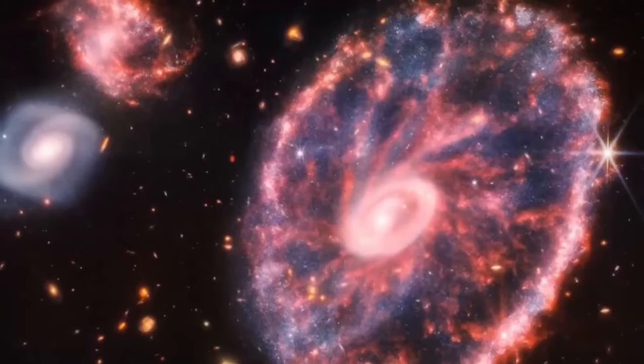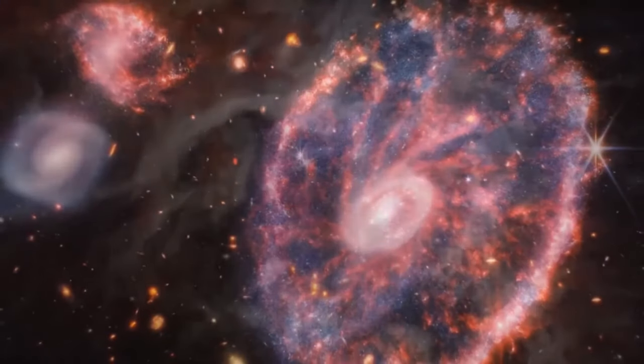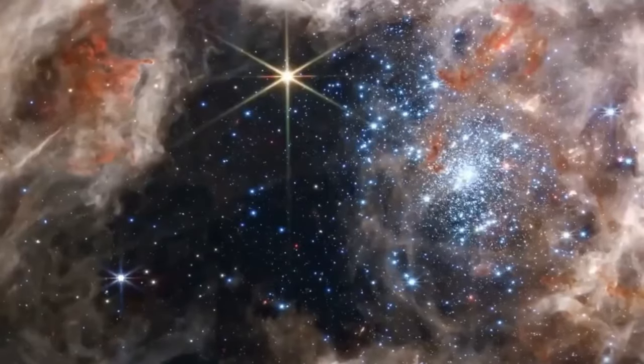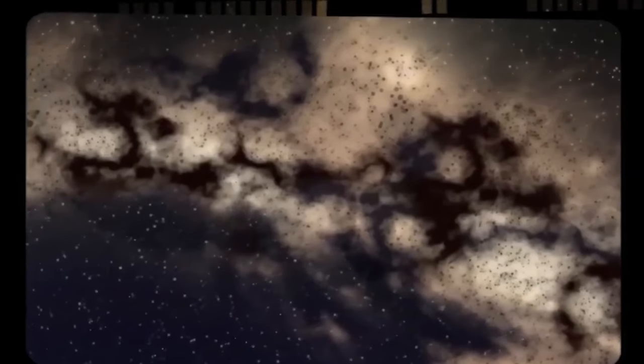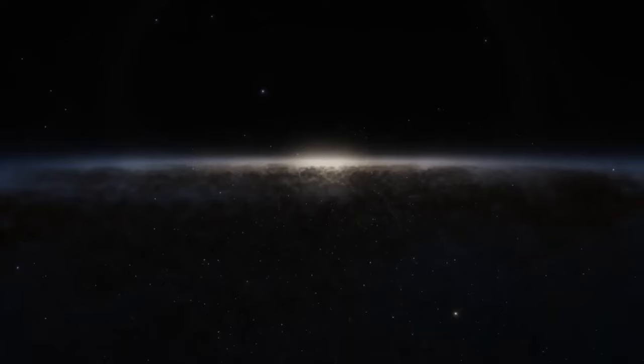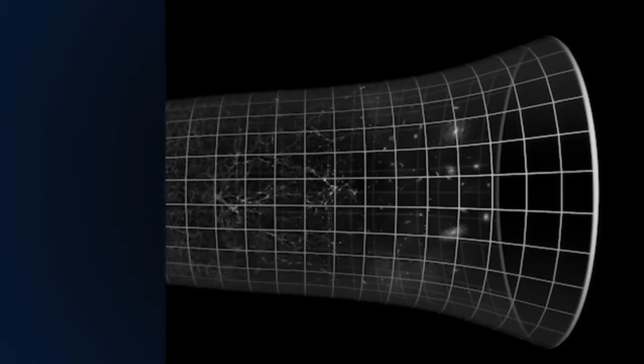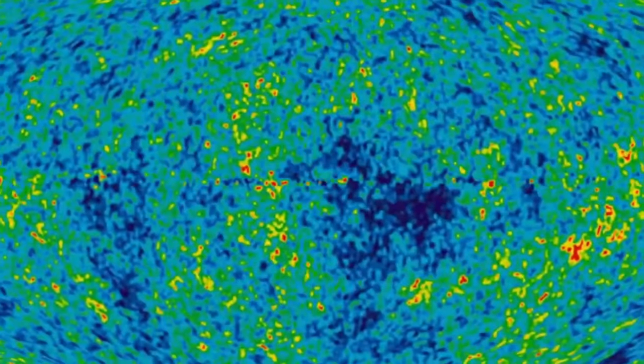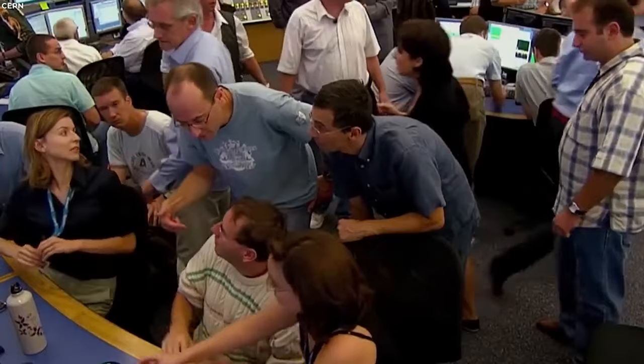But why so deep? Well, apart from shielding the Collider from the world above, the depth cleverly avoids the challenging terrain of the Jura Mountains. By doing this, there was no need to dig a massive vertical axis, saving a significant chunk of change. After all, who'd want to buy expensive land on the surface when there's ample space below?